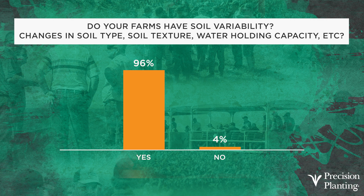Only 4% said they were flat, black, and beautiful, and didn't have any variability. But this shows you that a lot of farmers have to address changes in soil type and yield potential on their farm. So this raises the question: if we have soil variability and differences in soil types, how do you plant the right genetics on the right acre if your soil types are changing?